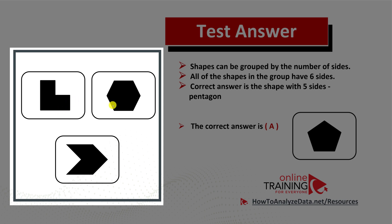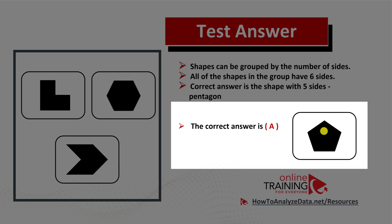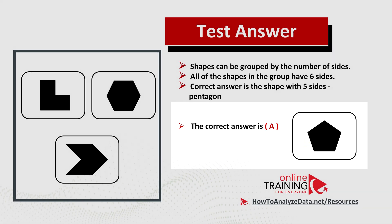Same with the hexagon: 1, 2, 3, 4, 5, 6. And same with the arrow: 1, 2, 3, 4, 5, 6. So the correct answer here is choice A for the pentagon, which only has 5 sides: 1, 2, 3, 4, 5. Hopefully you've nailed this question and answered it correctly, and now know how to answer similar questions and problems on the test.